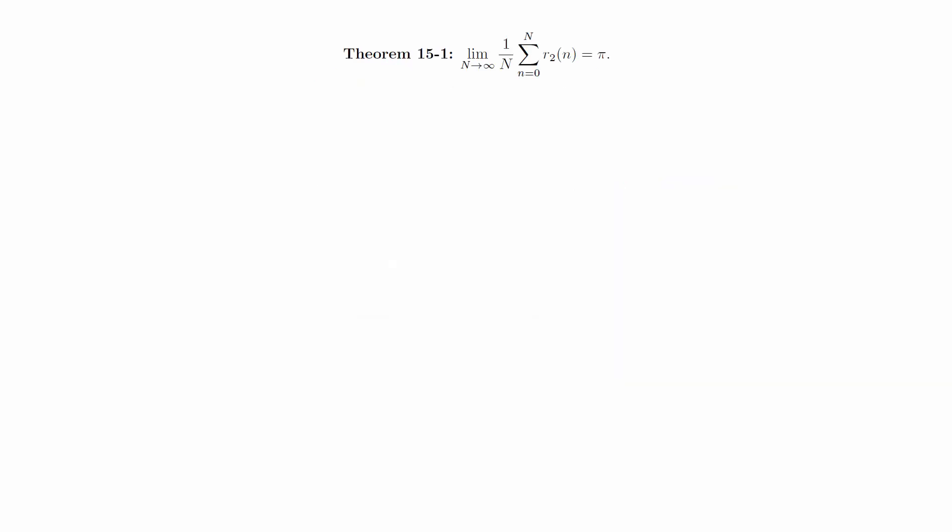The theorem: the limit as n tends to infinity of 1 over n times the sum of r_2(n) is equal to pi.